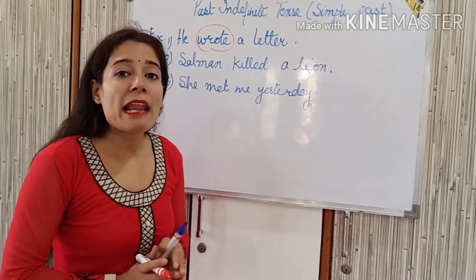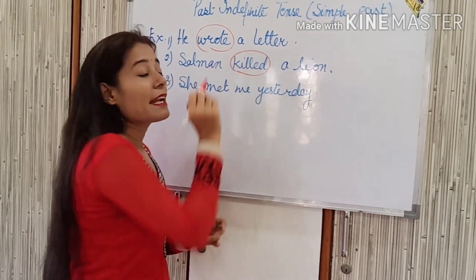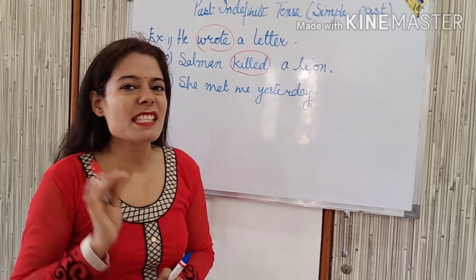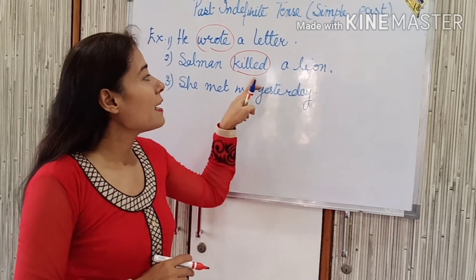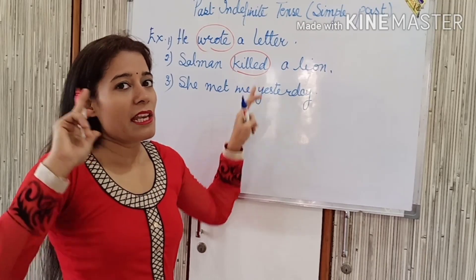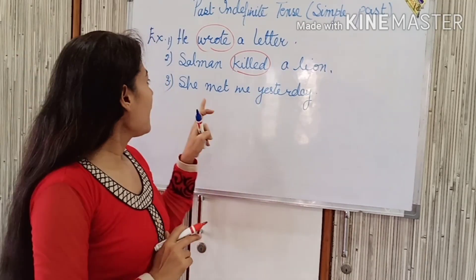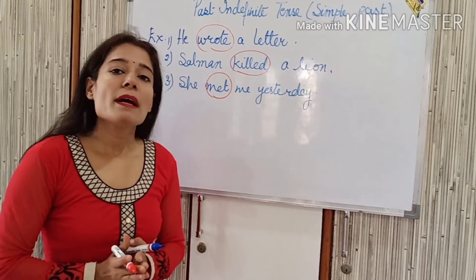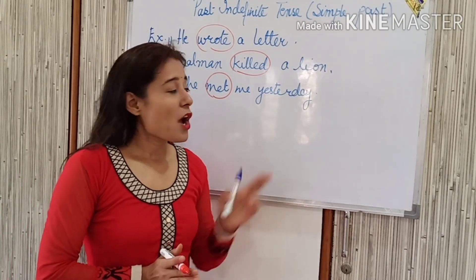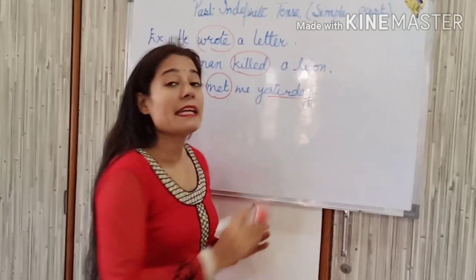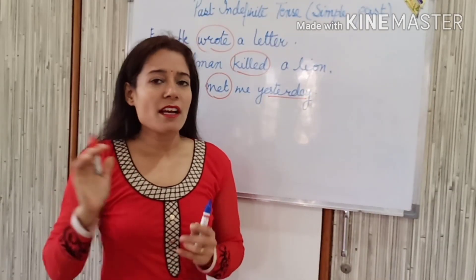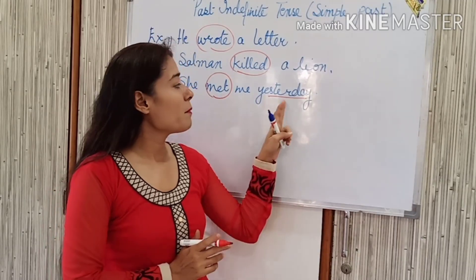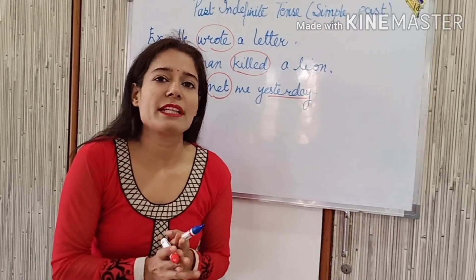The next sentence is: Salman killed a lion. So 'killed' is the second form of 'kill' — we have not written 'kill' or 'kills' or 'will kill' — 'killed a lion', so we know that this is a past event. Now 'she met me yesterday' — we have used the second form of 'meet', and with it there is the word 'yesterday', a past time showing word.